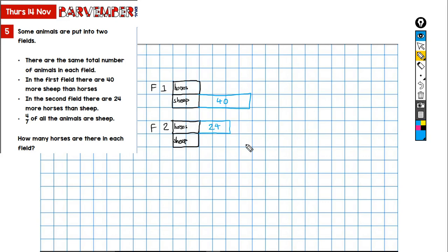Okay, right, now what have I got? Well what I think I have now is I'm comparing field one and field two, and I'm comparing the sheep to the horses. I think I have a difference here, and this gives me a difference between the sheep and the horses of 40 take away 24, which is 16. Okay, and why is that important?